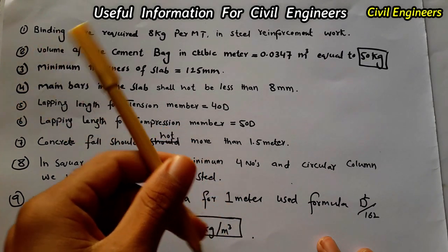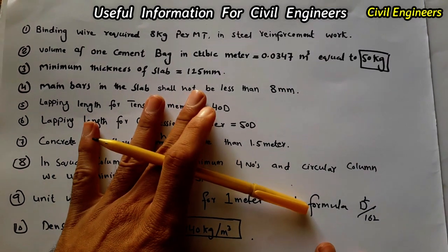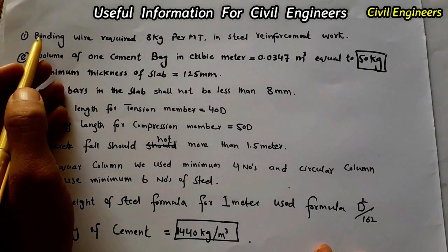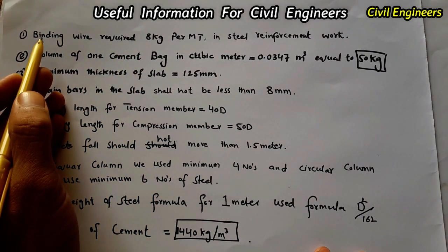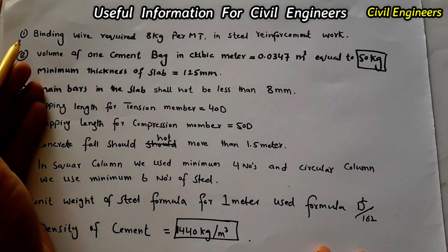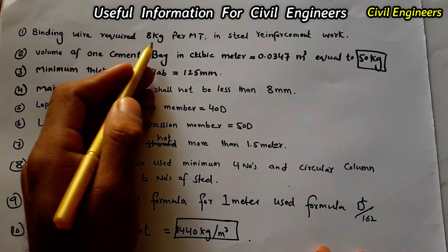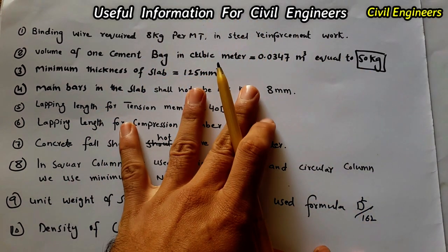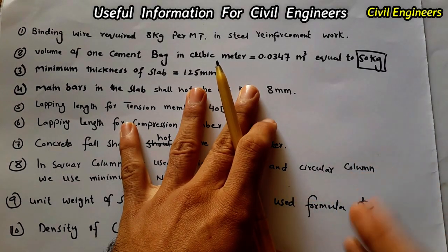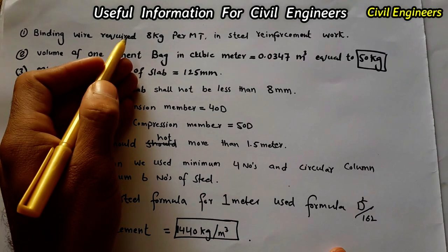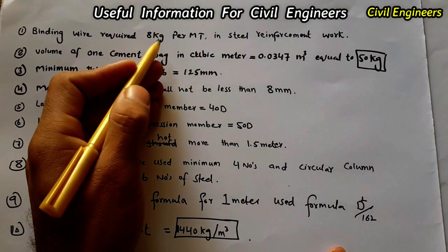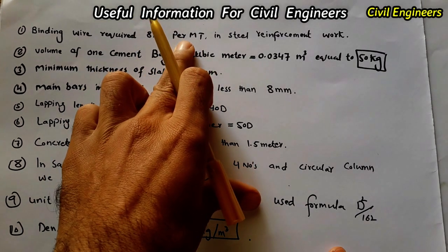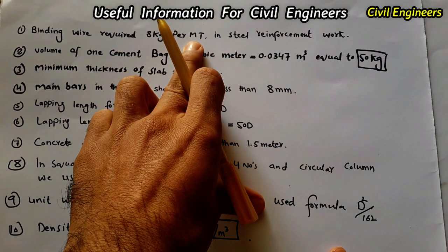Let's start with useful information for civil engineers at site to remember. The first important point is that binding wire required is 8 kg per MT for steel reinforcement work. So if you are working in reinforcement work, we need binding wire — 8 kg per MT.